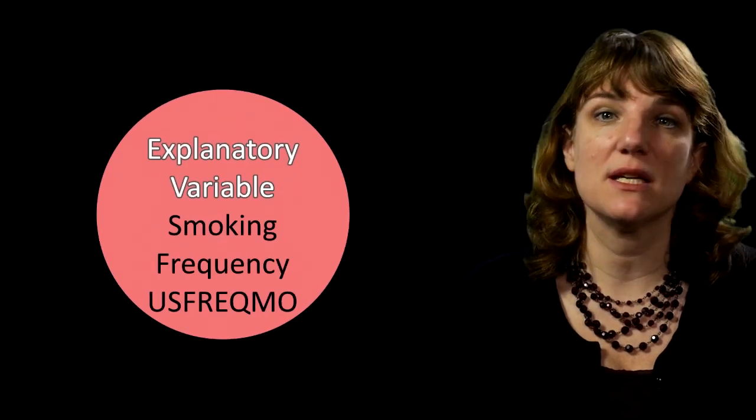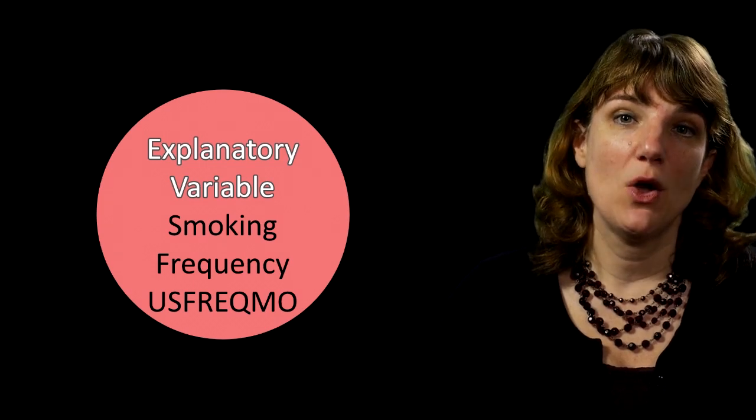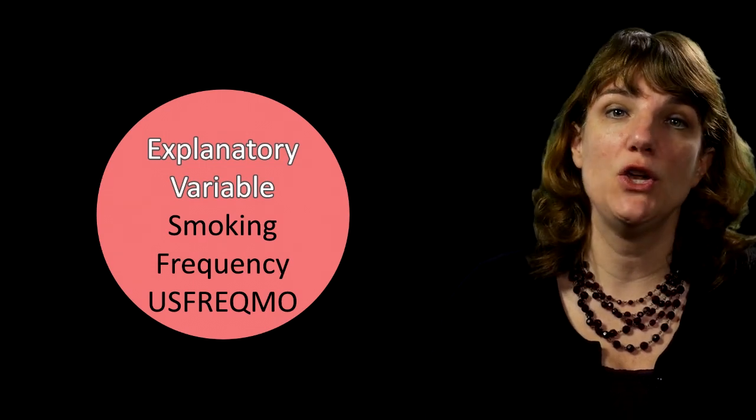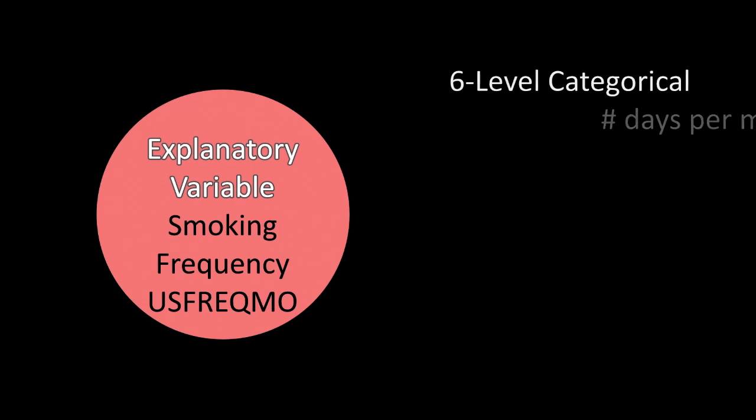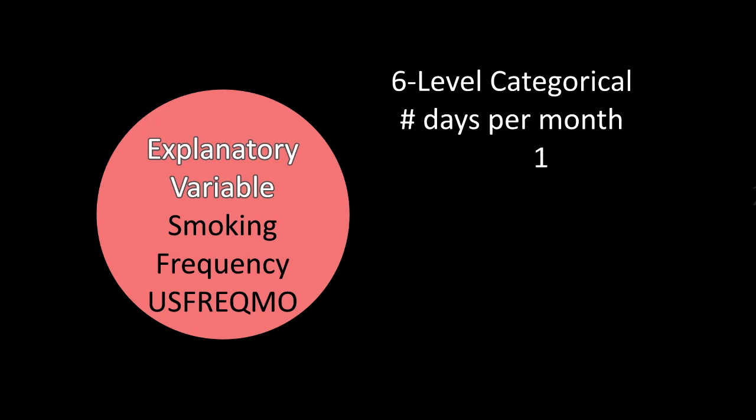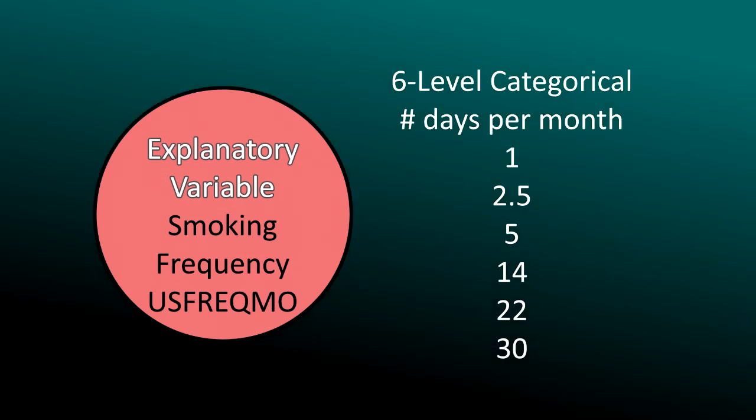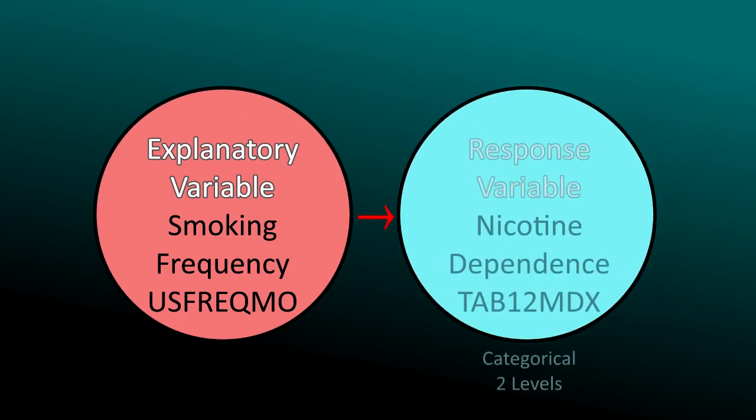For this analysis, I'm going to use a categorical explanatory variable with six levels, the number of days smoked per month, which you may remember I called US Freak MO, with the following categorical values: smoking approximately 1 day per month, 2.5 days per month, 5 days per month, 14 days per month, 22 days per month, and 30 days per month. My response variable is categorical with two levels. That is, the presence or absence of nicotine dependence in the past 12 months, called TAB12MDX in the NESARC dataset.